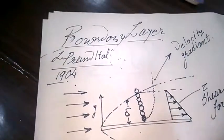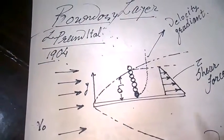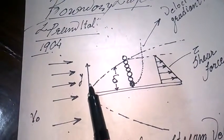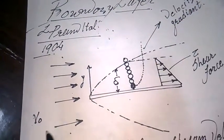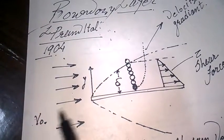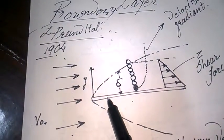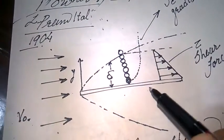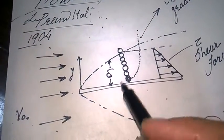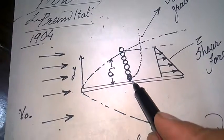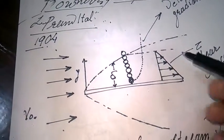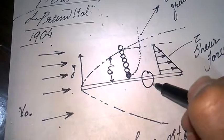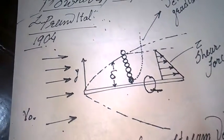Any fluid passing over a solid surface — here our fluid is passing with an initial velocity V₀ over this plate. What happens when any fluid passes over a surface is that its particles get stuck to it.